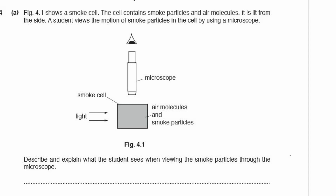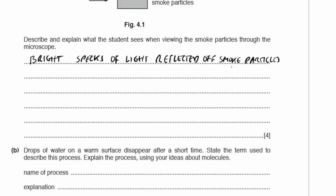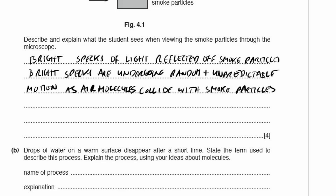Question 4: figure 4.1 shows a smoke cell containing smoke particles and air molecules, lit from the side. A student views the motion of the smoke particles using a microscope. Describe and explain what the student sees. They're going to see bright specks of light reflected off smoke particles, undergoing random and unpredictable motion as the air molecules collide with the smoke particles — this produces Brownian motion.